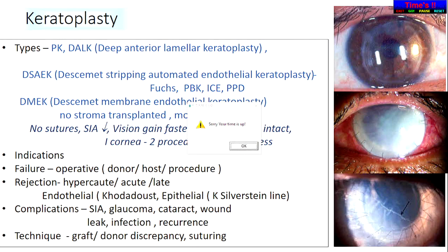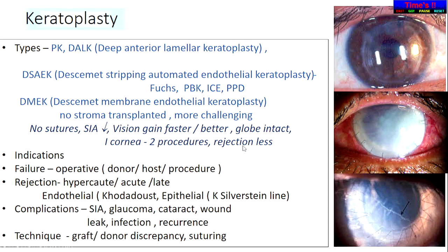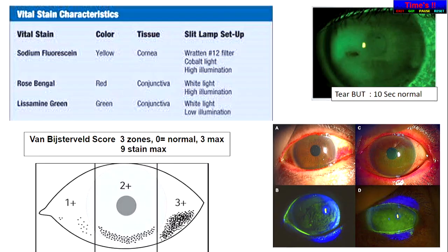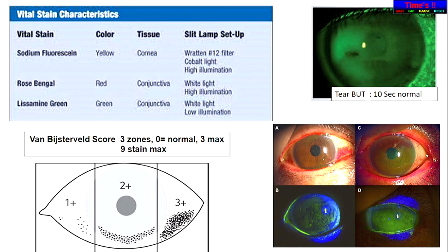For keratoplasty, know the types — DMEK, DSAEK, DSEK — indications, and rejections. Always differentiate rejection from failure: failure can be due to any cause — glaucoma, dry eyes, primary failure from poor graft quality — whereas rejection is only immune-mediated. Vital stain characteristics with this diagram, if drawn for a dry eyes patient, will make your viva. To conclude, in 2020 we expect you as residents to walk through the exam with 2020 vision. Thank you.